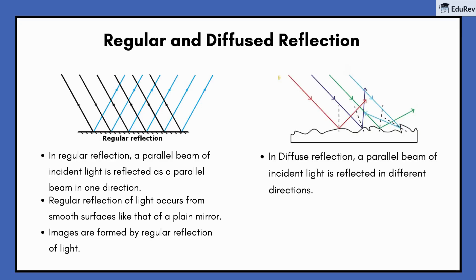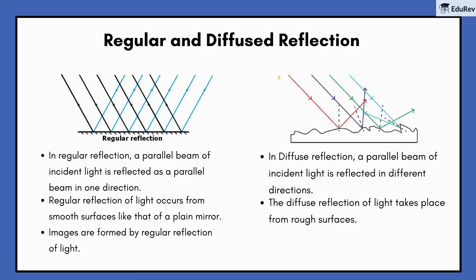Diffuse reflection is different. In diffuse reflection, a parallel beam of incident light is reflected in different directions. Diffuse reflection takes place from rough surfaces, and no image is formed in diffuse reflection of light.